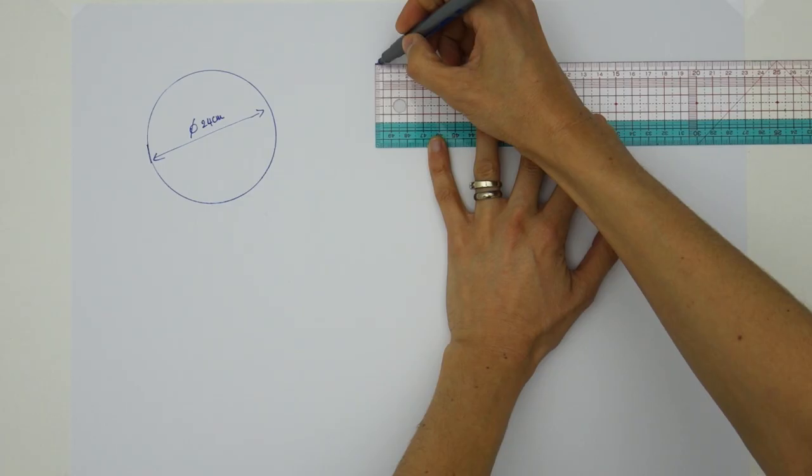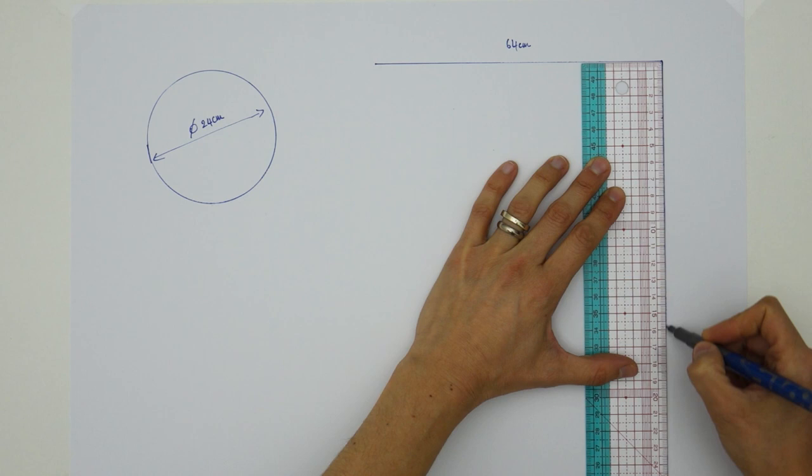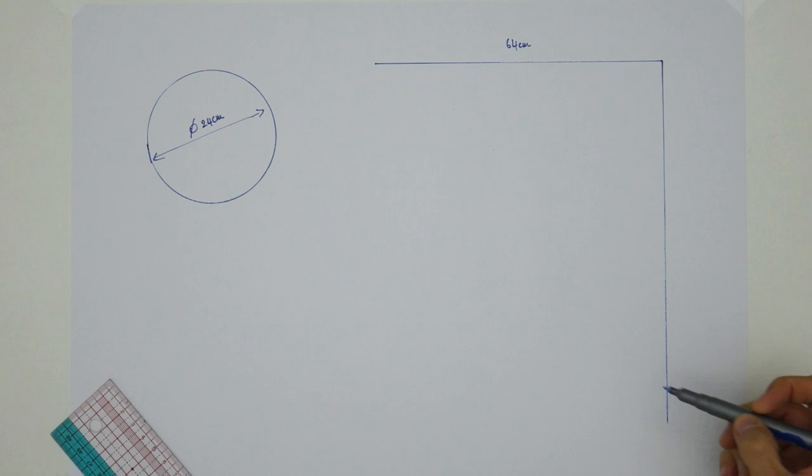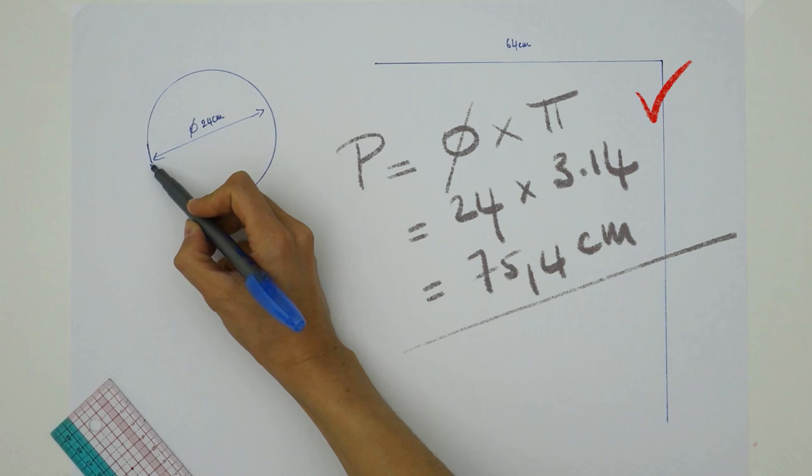I am now going to trace the first side of a rectangle. Make it as long as you wish your bolster to be. The standard measurement is about 64 cm. The second side of the rectangle equals the perimeter of our circle. Quick reminder, the perimeter equals the diameter multiplied by pi. In our example that's 24 times 3.14 which gives us 75.4 cm.